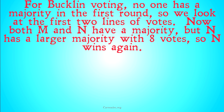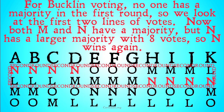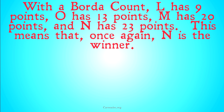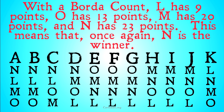For Bucklin voting, no one has a majority in the first round, so we look at the first two lines of voters. Both M and N do have a majority, but N has a larger majority — eight votes to seven — so N wins again. With a Borda count, L has nine points, O has 13 points, M has 20 points, and N has 23 points. Once again, N is the winner.